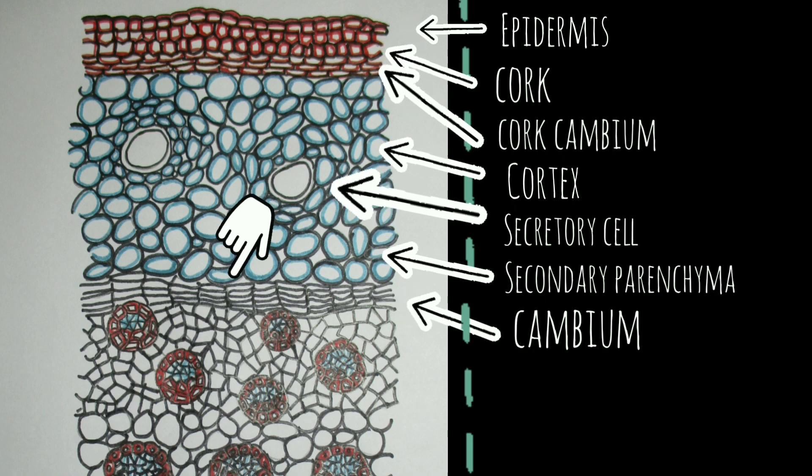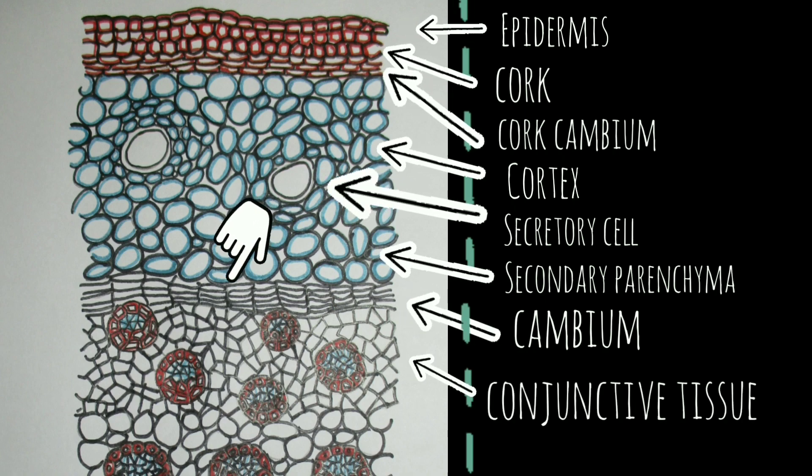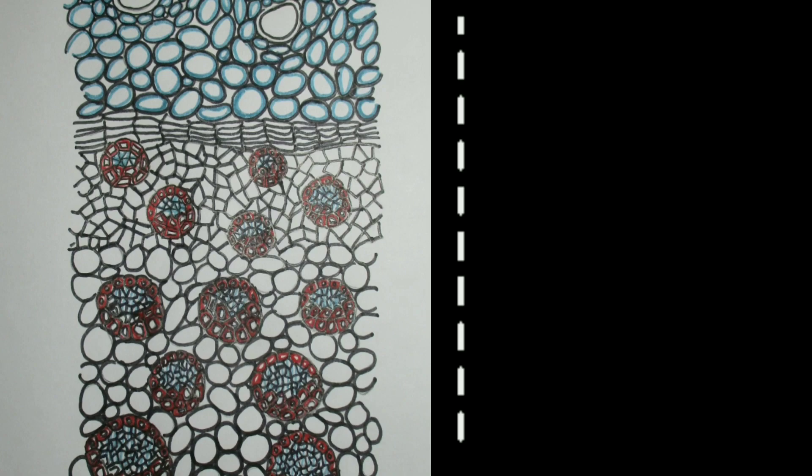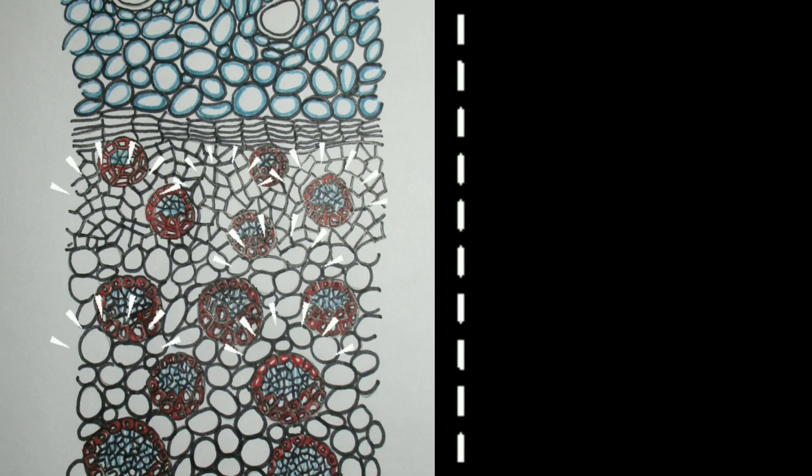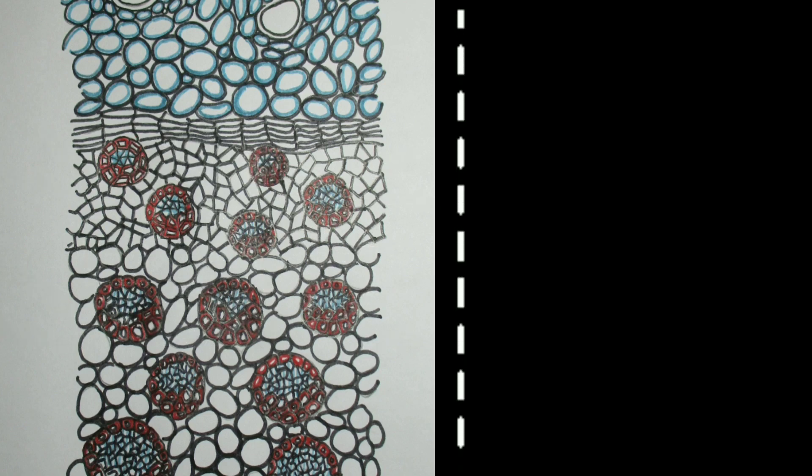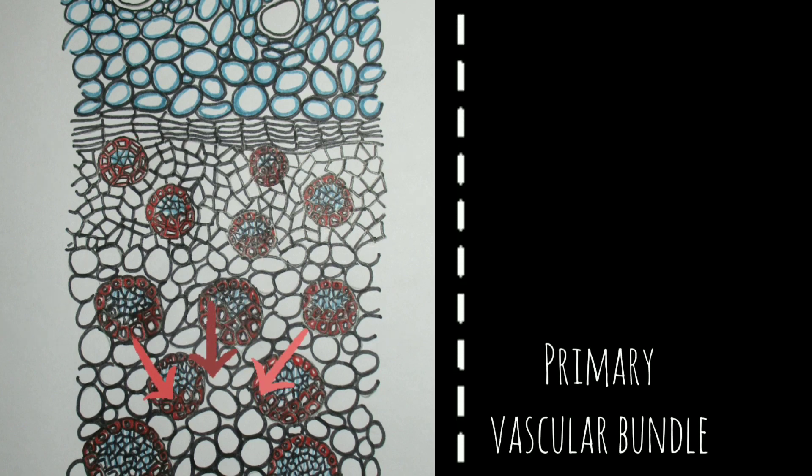Now these are the vascular bundles and these are collateral and closed type. The primary bundles are scattered at the central region of ground tissue and the secondary bundles are differentiated from conjunctive tissues. There is no pith.